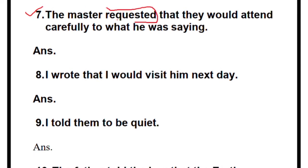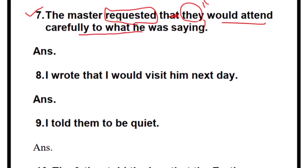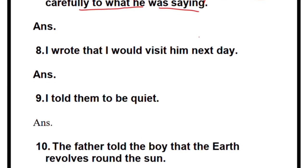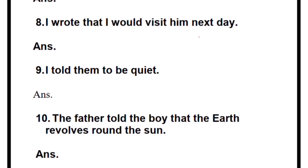Seventh one: 'The master requested.' This is a request, so use 'please.' Write 'the master said to them,' add a comma, remove 'that,' open the quotes, then start with 'Please.' 'Would attend' becomes 'attend.' 'Was saying' is past continuous — change it back to present continuous: 'is saying.' So: 'The master said to them, Please attend carefully to what he is saying.' Close quotes, full stop.